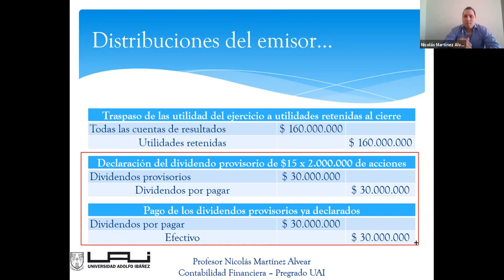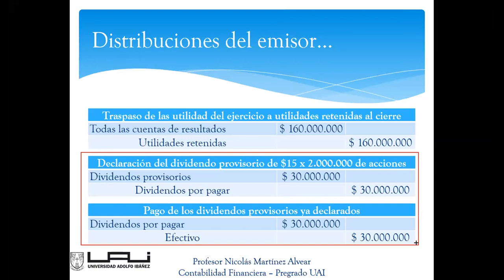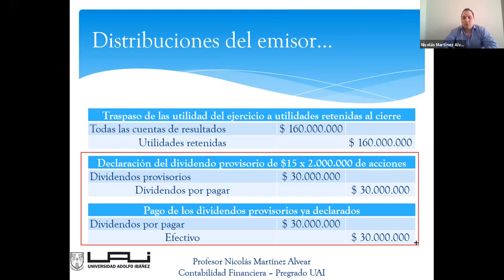Entonces tú dices: oye, aquí están los dividendos, les van a pagar 10 pesos a cada uno. Todo al mismo tiempo. ¿Para qué hacer una junta accionista por 10 provisorios? Porque es provisorio, no es una cifra definitiva. Entonces basta que digan que se declaró el dividendo para saber que ya se va a hacer el asiento de pago. Declarado y pagado al tiro.